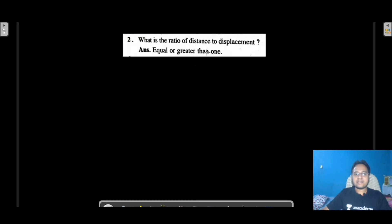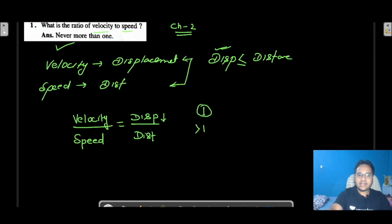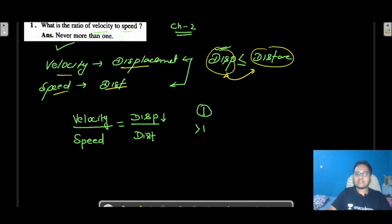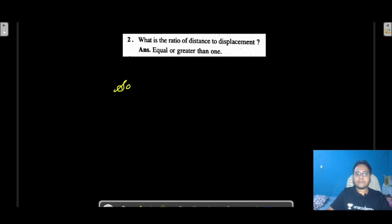Moving to Question Number 2: What is the ratio of distance and displacement? Just as we discussed in the previous question, displacement is always either equal to distance or less than distance — यह theory में आपने पढ़ा होगा। So the answer here is the same as Question 1, because in both cases (velocity/speed or distance/displacement) the answer is never more than 1.